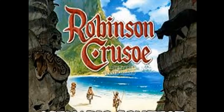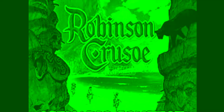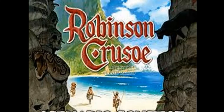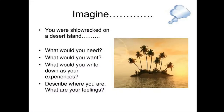Robinson Crusoe is a novel which tells a fictional tale about a castaway sailor's life and his adventure on a deserted island. Just imagine that you were shipwrecked on a desert island — you were alone. What would you feel, what would you need, what would you want, and what would you describe about where you are and your feelings? If you can imagine all these things, you will clearly understand the novel and the situation of this character.